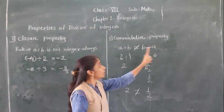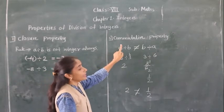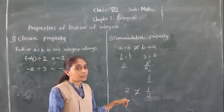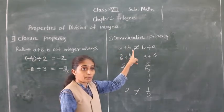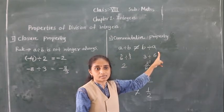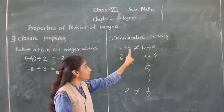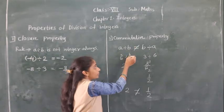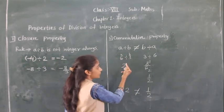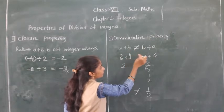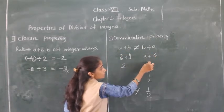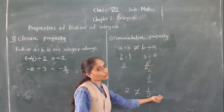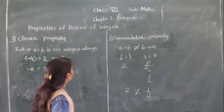This commutative property works for addition — A plus B equals B plus A — and for multiplication — A into B equals B into A. But it does not work for division of integers, because A divided by B is not equal to B divided by A. For example, 6 divided by 3 gives 2, but 3 divided by 6 gives 1 upon 2, so 2 is not equal to 1 upon 2. This property does not work in division of integers.